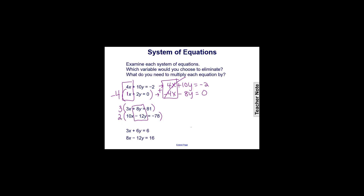This is really an opinion question at this point — you could eliminate either variable. But since the y variables had opposite signs and 8 and 12 have a least common multiple of 24, let's go with multiplying by 3 and 2. When we add these equations, we have opposite coefficients for y and the y variable eliminates. My advice is to go with coefficients that have opposite signs — it's best to add your equations because subtracting can be tricky when you have to subtract negatives.